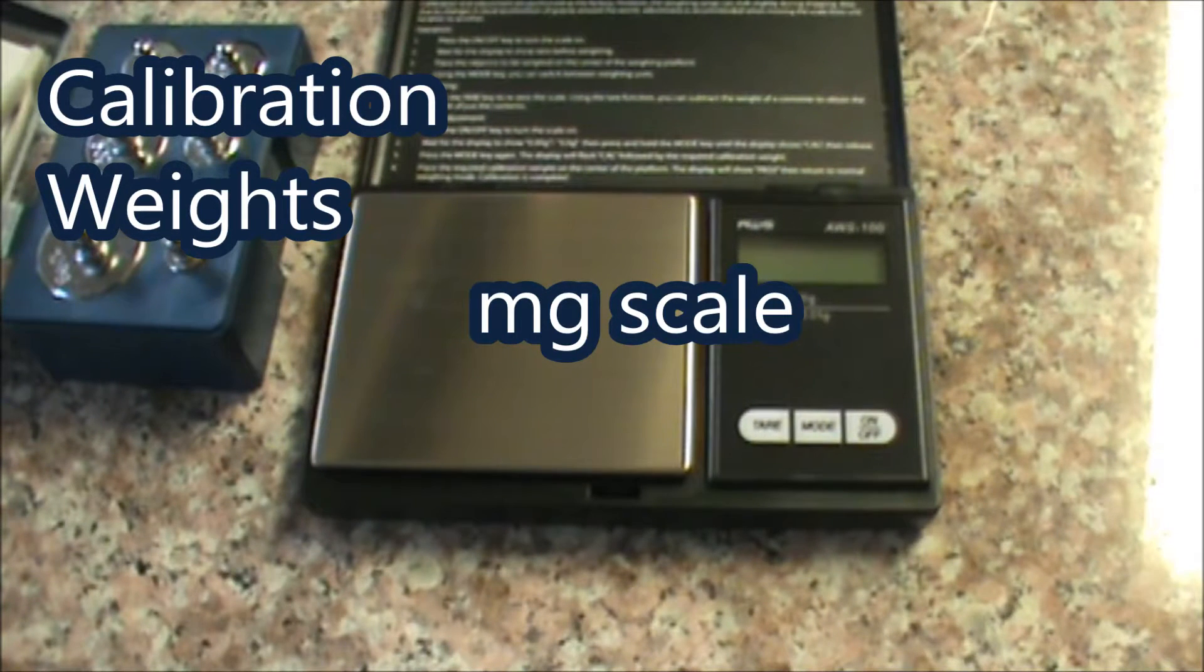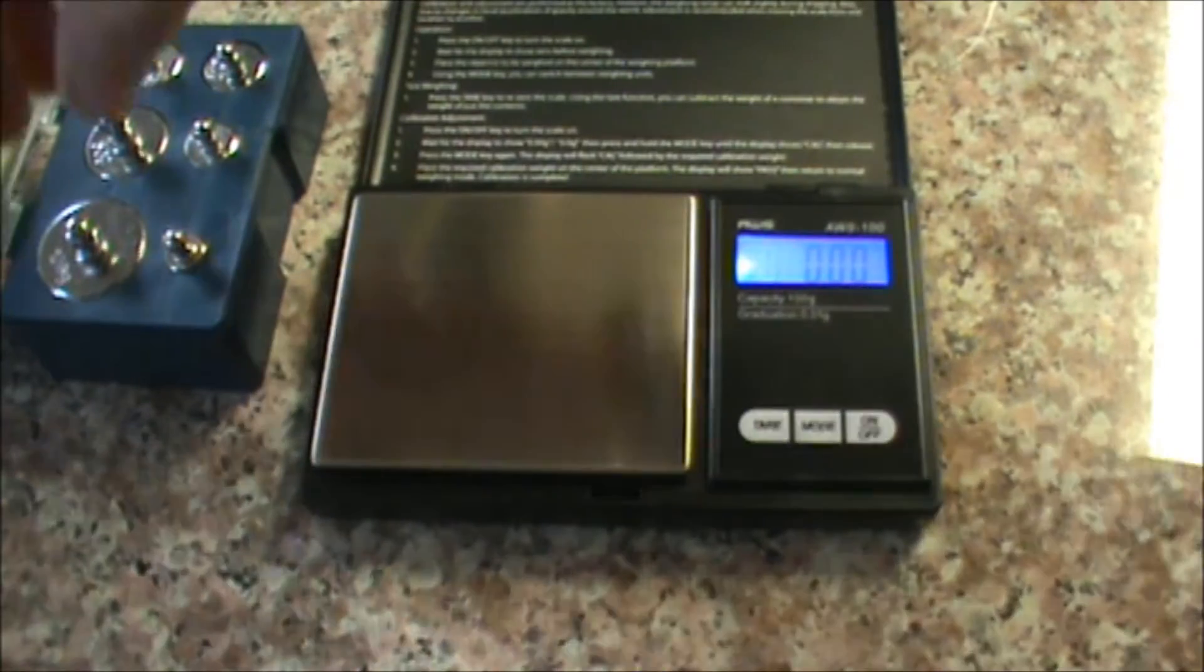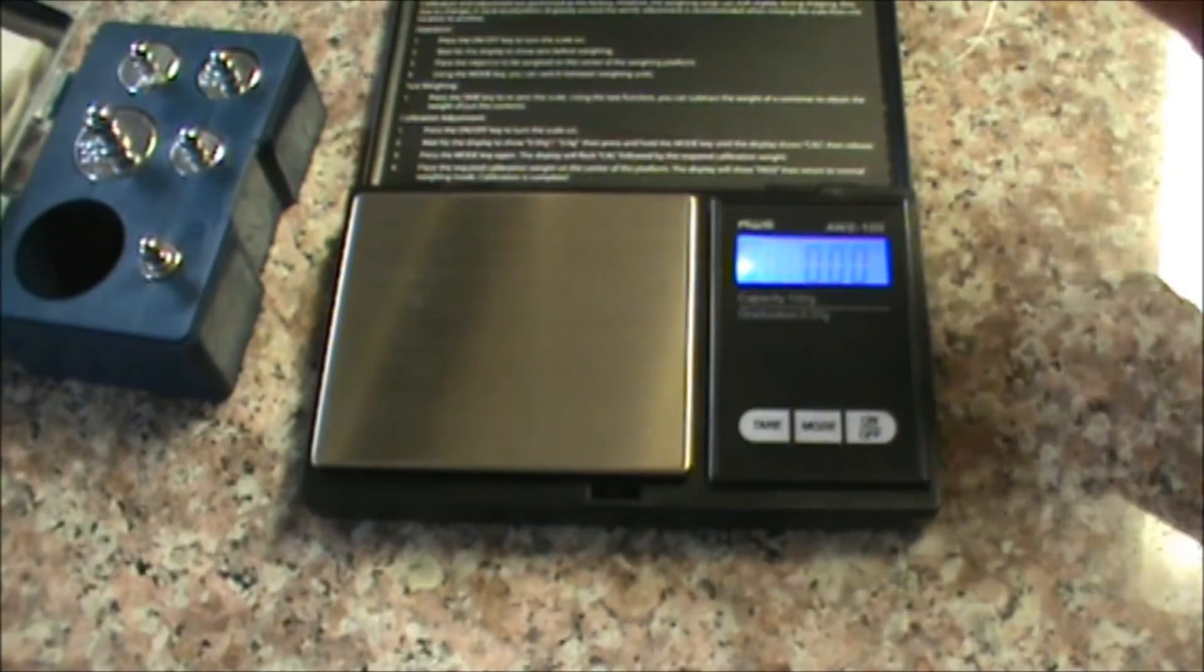Using a microgram scale is much easier and shouldn't be scary for anyone at all. I have my tiny AWS 100 scale that measures up to 100 grams, and so here we go. I turn it on and my calibration units are right here.